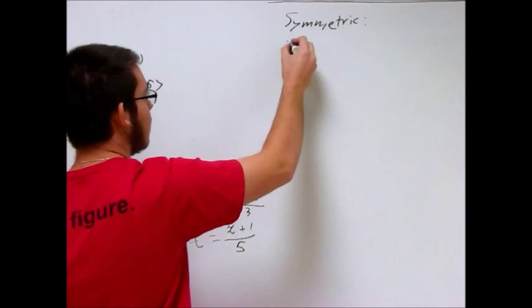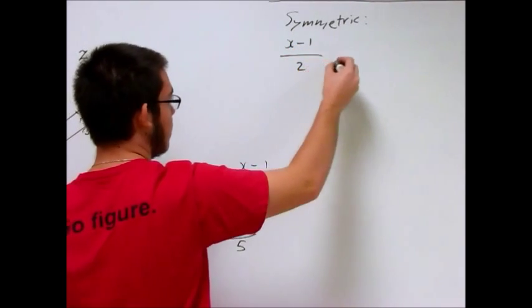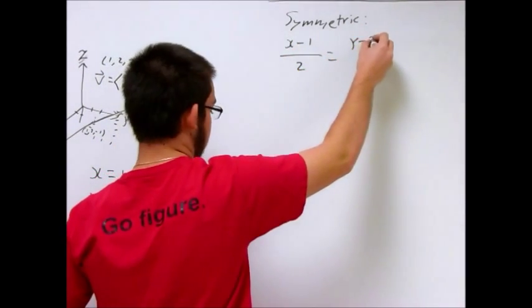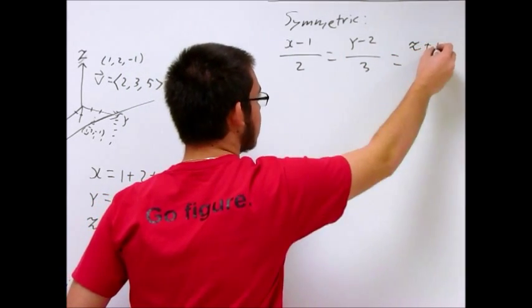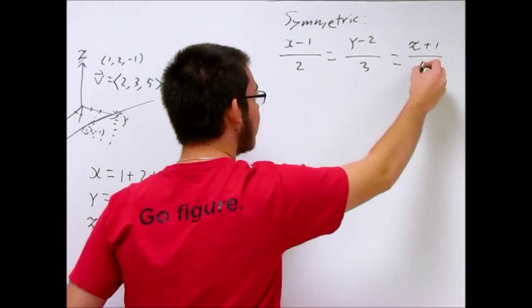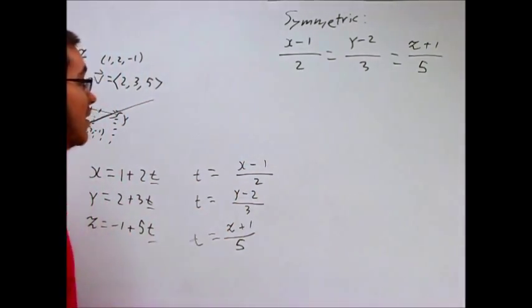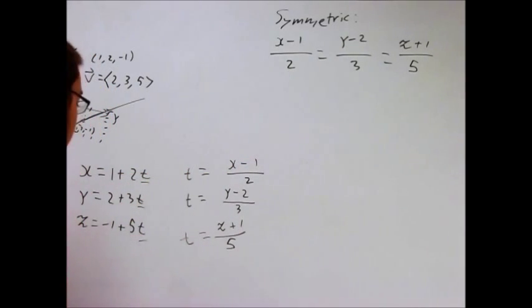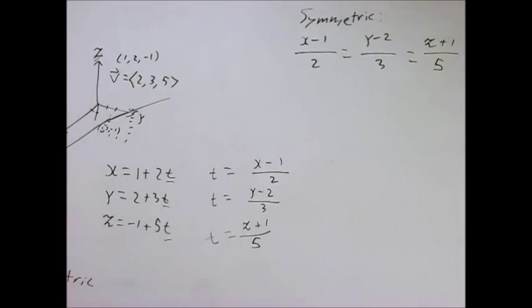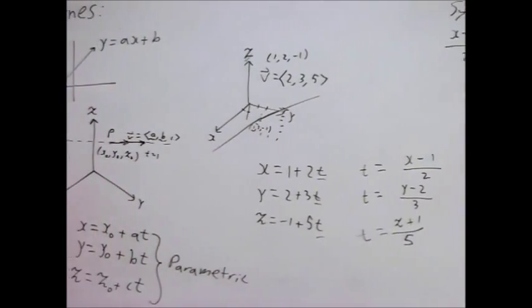We have x minus 1 over 2 equals y minus 2 over 3 equals z plus 1 over 5. And all of these equations, all these equalities, represent this line that we have right here. And more generally, if you use the a, b, c, and the x knot, y knot, z knot,